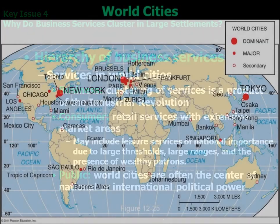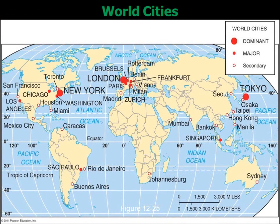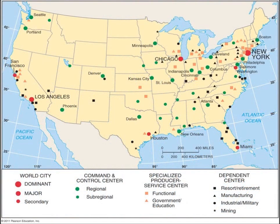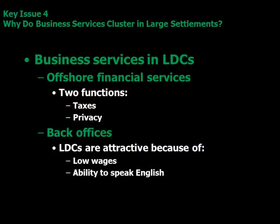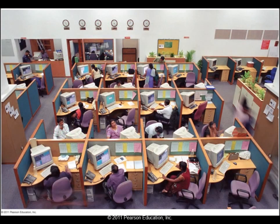Finally, look at what public services are — for example, state capitals provide all kinds of public services. That should be it. Read the chapter; it's not a long one. Look for the bold print and the key ideas and keywords. That should do it — 40 questions, open note.